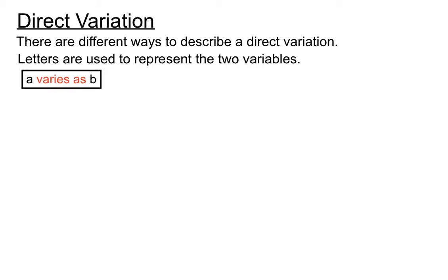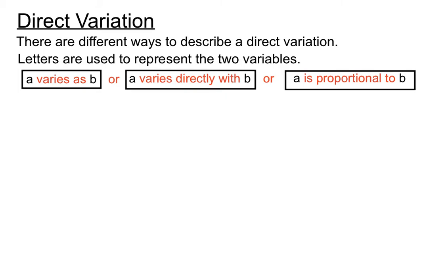So the ways we indicate direct variation in a question: the most common way they say it is A varies as B. They could say A varies directly with B and leave no doubt that it's a direct variation. And another way of saying the same thing is that A is proportional to B. So all three of those varieties of ways indicate a direct variation in the question.